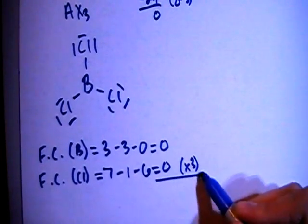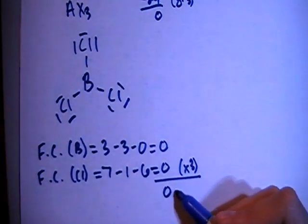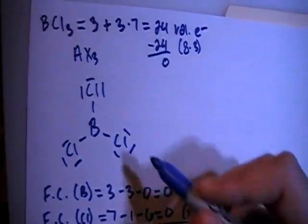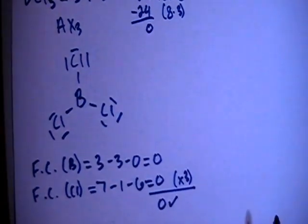So multiply that times 3, and then sum all those up. It's still going to be overall formal charge of 0, which is exactly what we need because this is not an ion. This is a non-charged particle or compound. So that's very good.